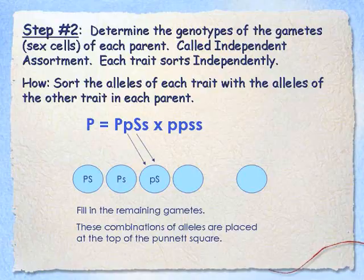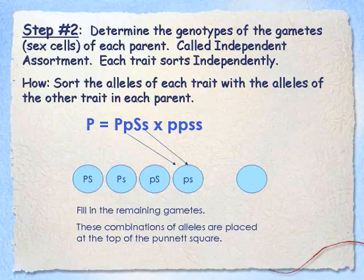Now I'm going to make the pairings. First, I'll have little p paired up with big S. Then I'll make my last possible combination: little p with little s. The four possible gametes from the first parent are: big P big S, big P little s, little p big S, and little p little s. Each has an equal chance of being passed on to the offspring.